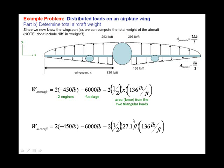Now, substituting x, 27.1 feet, what we solved for in part A. Solving this equation now, just actually calculating that, comes out with 10,590 pounds, or 10.59 kips, the total weight of the aircraft.